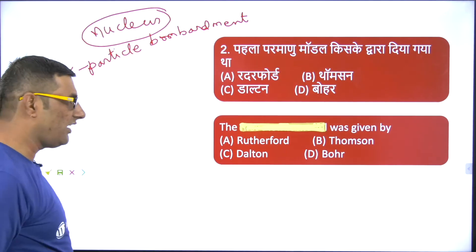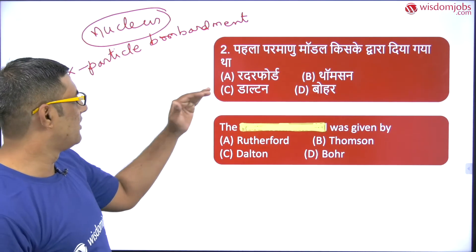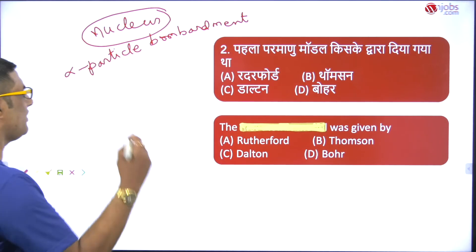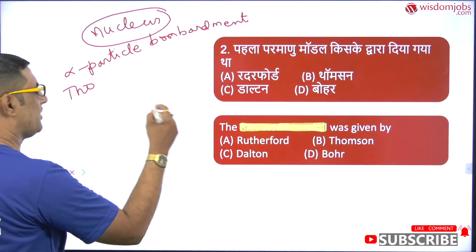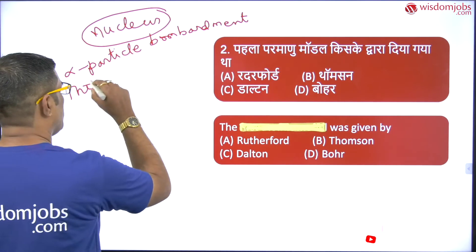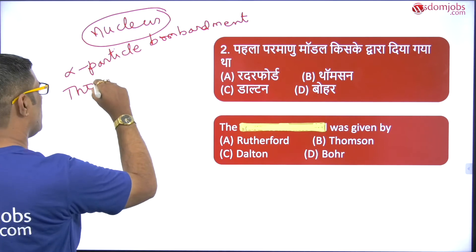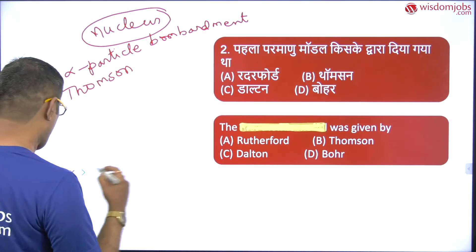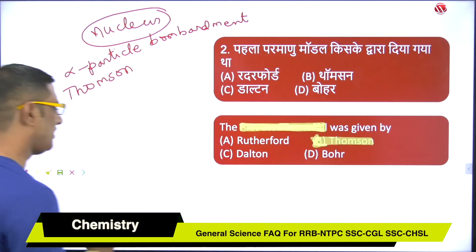Coming to Thompson — Thompson is the first person to put forward the modern theory, the first theory about the inside particles of the atom. So Thompson is the correct answer.